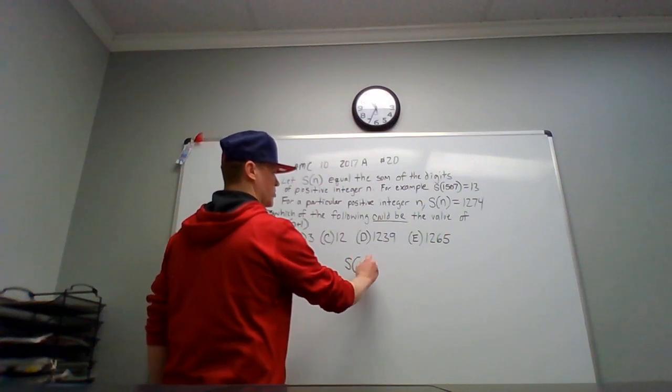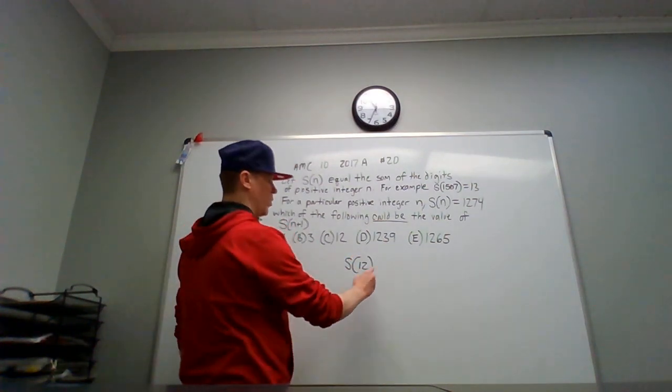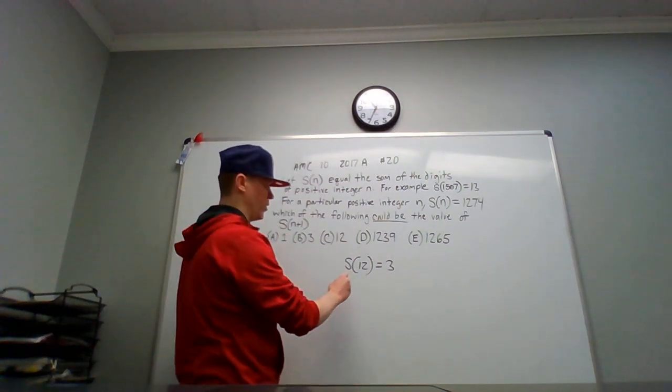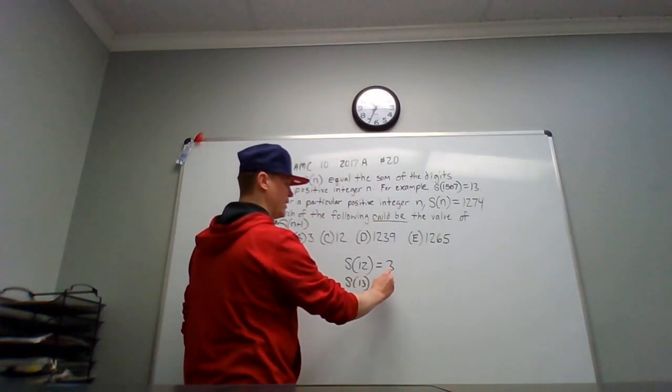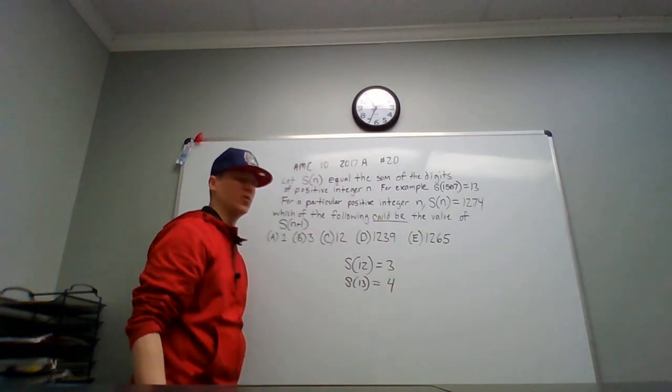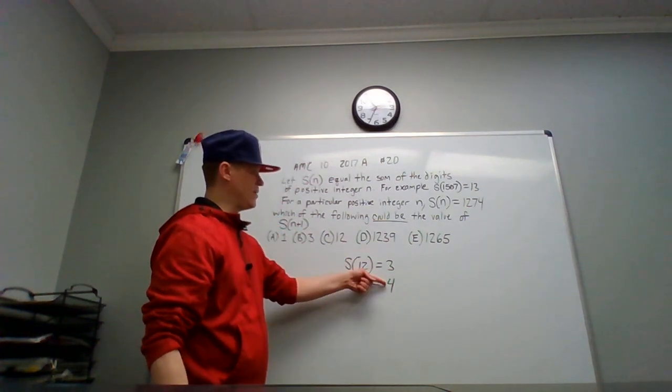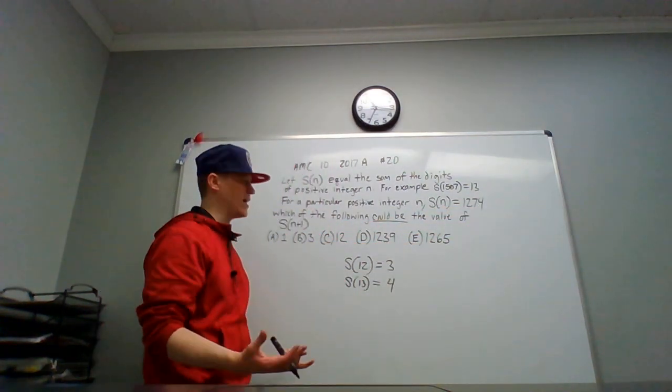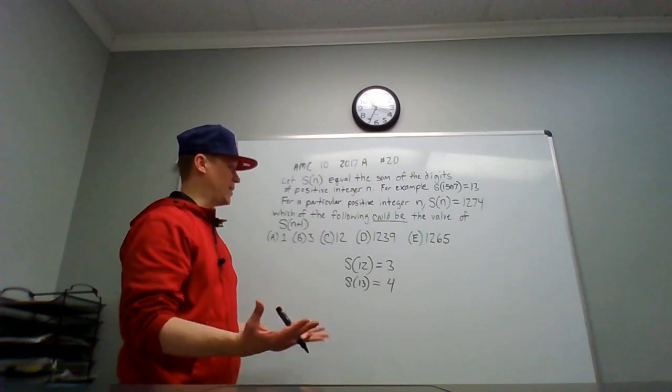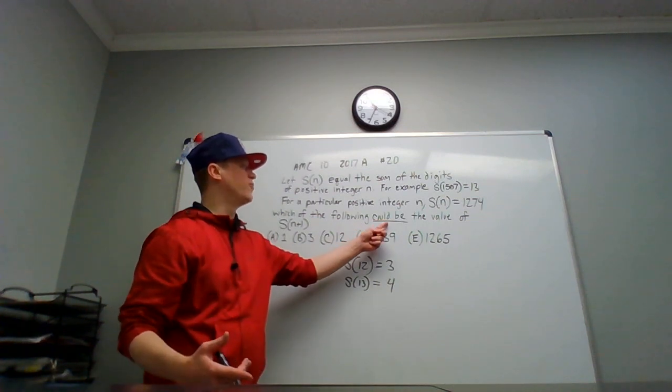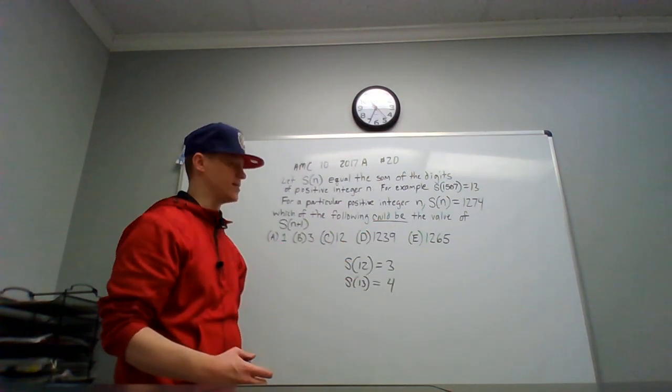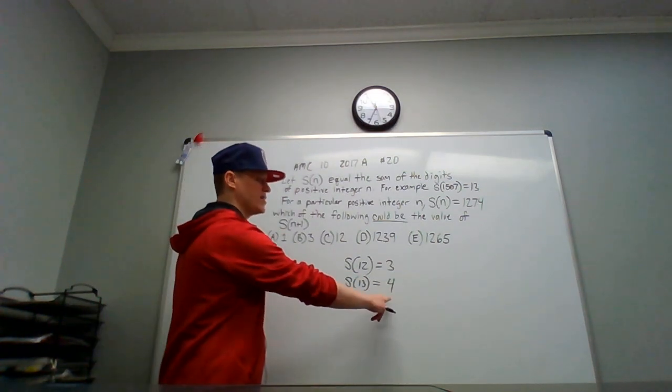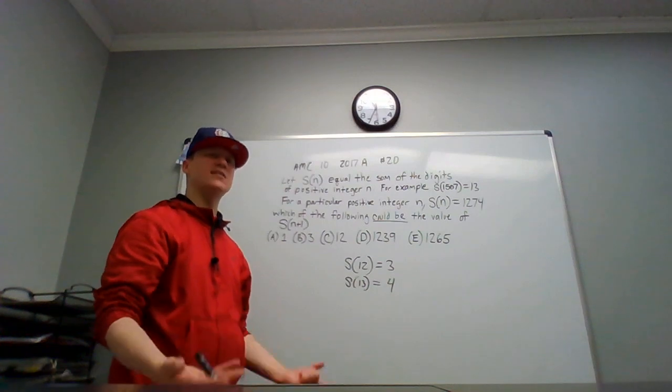Let's just see what happens if I do s(12) for instance. 1 plus 2 is 3. If this number went up by 1, what would happen? s(13) is simply 4. Well it looks like the sum went up by 1. We would just go to 1275, but 1275 is not an answer choice. It's a possibility, but we're looking for what could be among the answer choices. But we can still learn from this. If we go to s(14) you'll get 5 and you'll see it consistently goes up by 1.